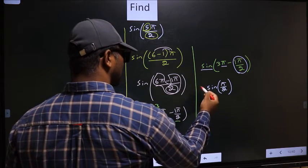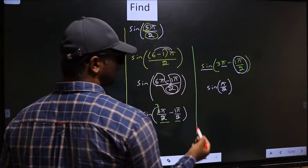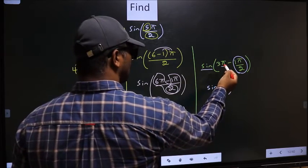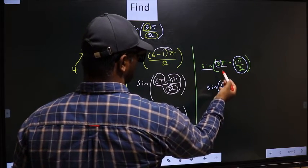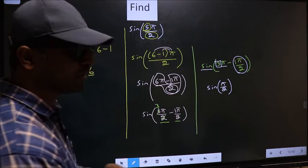Now the question is will we get here plus or minus. To answer that we should look at the number before π which is 3. And 3 is odd.